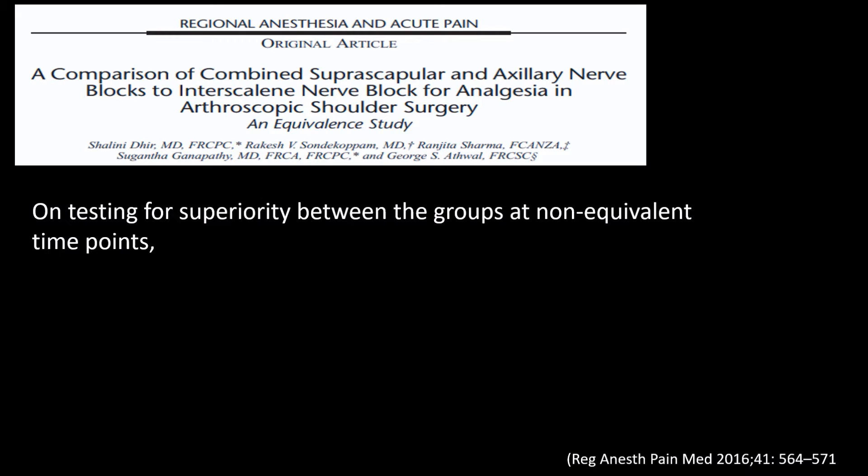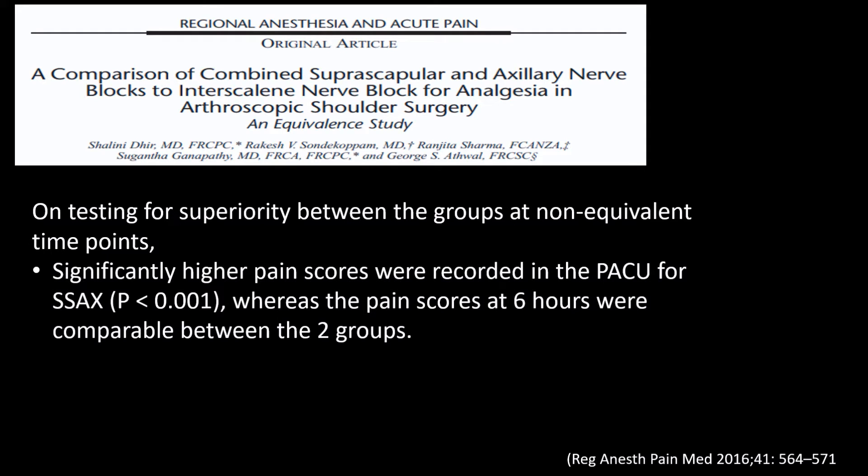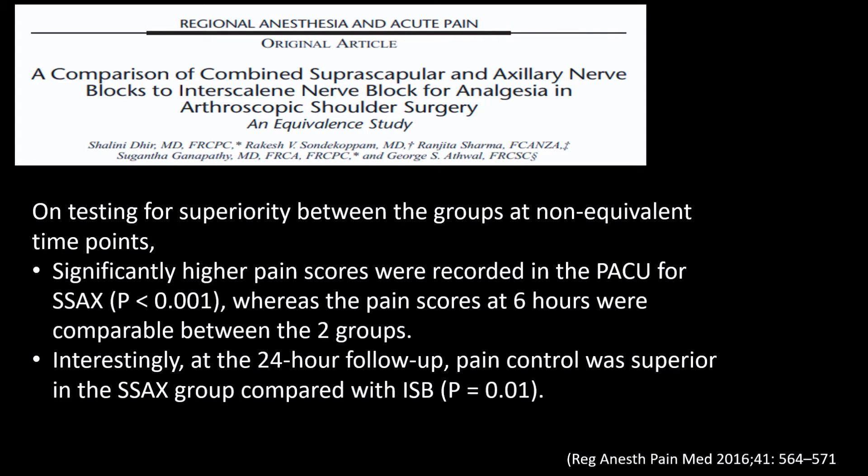The combined suprascapular and axillary block is associated with a lower incidence of dyspnea and discomfort. Similar results were obtained by another group comparing the suprascapular and axillary block with interscalene block for shoulder surgery. The interscalene block again works better in the immediate postoperative period in the PACU, but after six hours there is very marginal difference, and at 24 hours pain relief was actually better with the combined suprascapular and axillary nerve blocks.